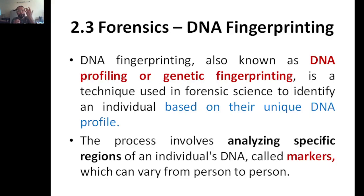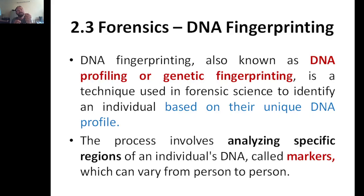Almost all parts of our body contain our DNA. For example, if one small hair of mine falls somewhere, somebody can take that hair, extract the DNA, and compare it with mine if I am a suspect. Once they run PCR amplification and then gel electrophoresis, they can compare the bands of DNA and say that the hair belongs to me. That is why it is called DNA fingerprinting. These specific regions are called markers, and based on these markers we identify a particular person because they vary from person to person.